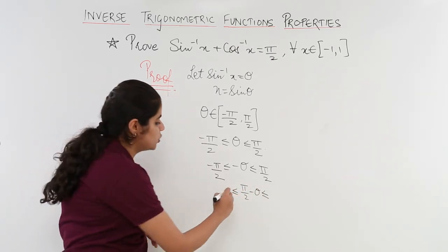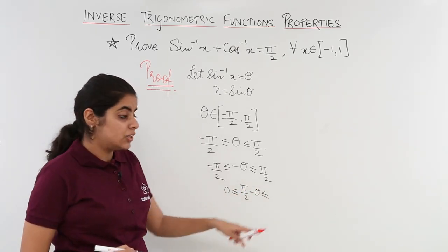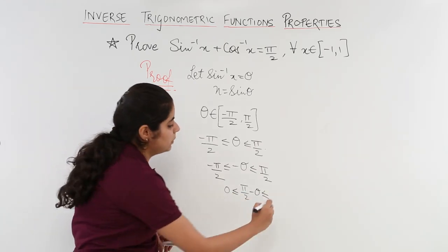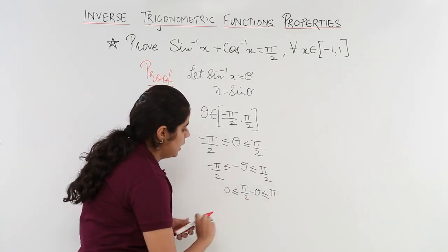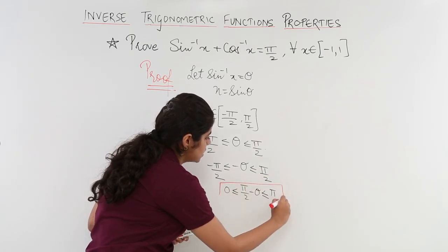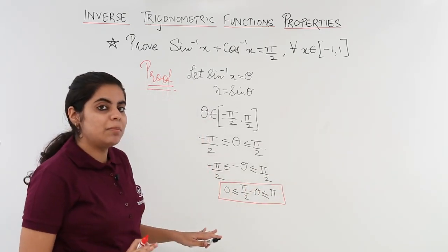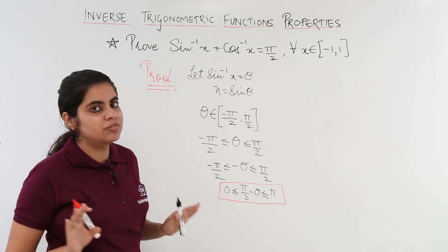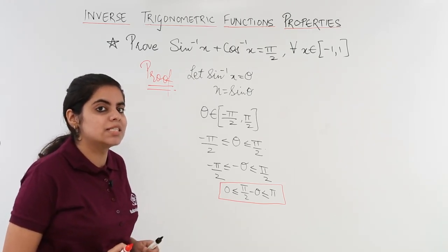Here pi by 2 minus pi by 2 will be 0 and here pi by 2 plus pi by 2 will be pi. Let's put it in a box we will be needing it later. Pi by 2 minus theta range is well defined written in front of me 0 to pi.